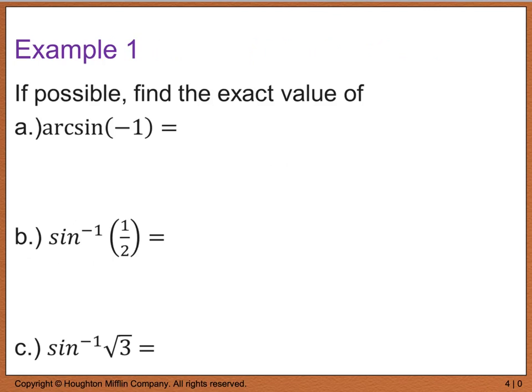Example 1: if possible, find the exact value of the arc sine of negative 1. The arc sine of negative 1 can be rewritten as: the sine of x equals negative 1 when... After doing our unit circle, that's at 3 pi over 2. However, when I look at 3 pi over 2, a red flag should go off because it falls outside of my given range. So I can rewrite 3 pi over 2 using the unit circle.